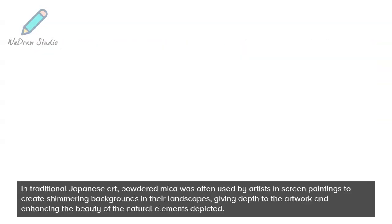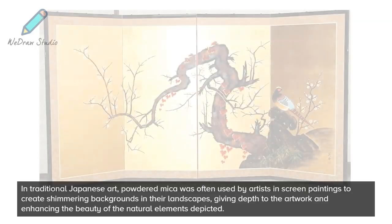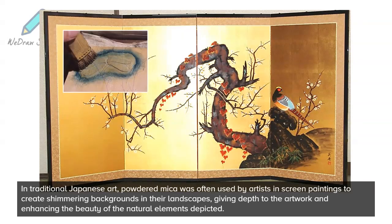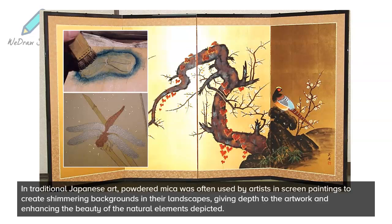In traditional Japanese art, powdered mica was often used by artists in screen paintings to create shimmering backgrounds in their landscapes, giving depth to the artwork and enhancing the beauty of the natural elements depicted.